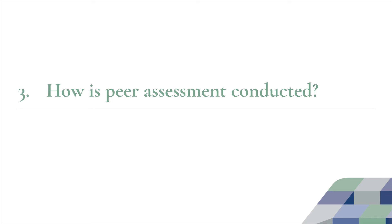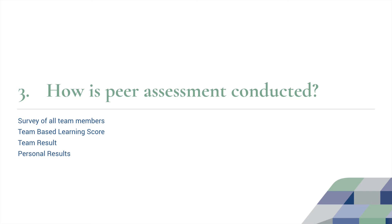How is the peer assessment conducted? First of all, there's a survey of all class members. You will rate every member of your team and also do a self-assessment against various criteria. The result of the survey is used to calculate a team-based learning score. When combined with the team result — that is, the results your teacher gives you for team reports, oral presentations, or other work — that produces your personal result. Your personal result is calculated from the team result and the team-based learning score, which we'll talk about later on.